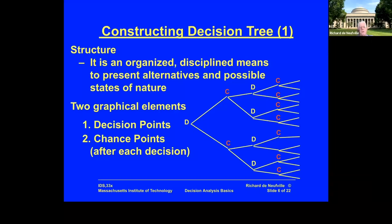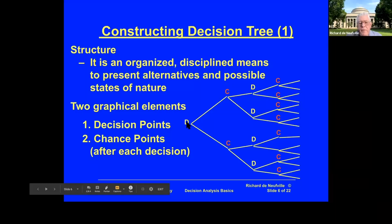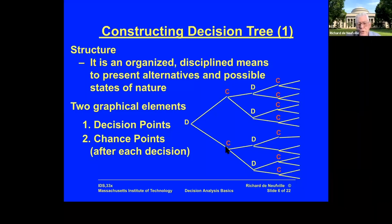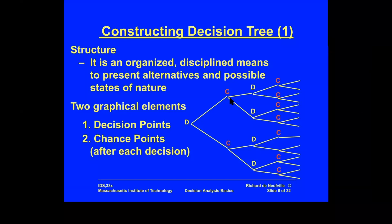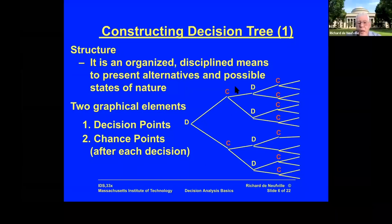Here is the structure. It's basically a disciplined way of presenting alternatives and it has two elements. It has the decision points — over on the left-hand side, we start and have a choice to make. In this simple case, I can either do choice one or choice two — two branches. Having done something, say I decided to build a plant somewhere, I then have a chance outcome: it performed well, not so well, it was a disaster, whatever it might be. I have possible outcomes.